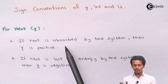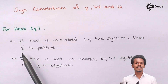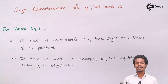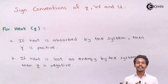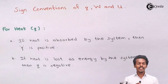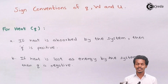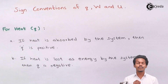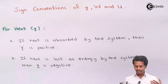For heat: if the heat has been absorbed by the system, then Q is said to be positive. Whenever we see a process where Q is positive, this clearly indicates that the system has absorbed heat, or that heat has been provided to the system by the surrounding. Because the system is absorbing the heat, Q is positive.